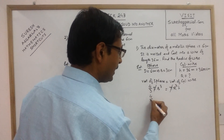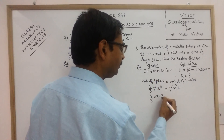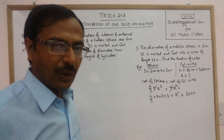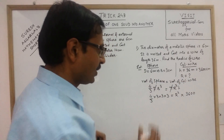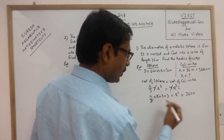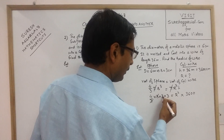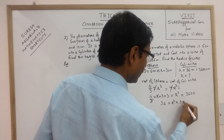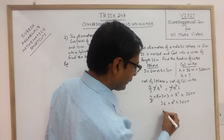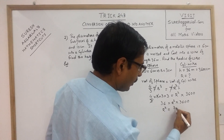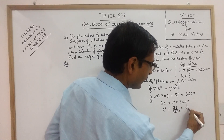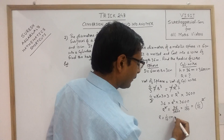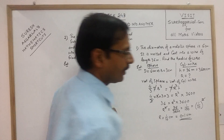Substitute the given values: (4/3) × r³ = R² × h, with π cancelled. r = 3, so r³ = 27; h = 3600 cm. This gives (4/3) × 27 = R² × 3600, which simplifies to 4 × 9 = 36 = R² × 3600. So R² = 36/3600 = 1/100, and since 1/100 = (1/10)², we get R = 1/10 cm = 0.1 cm, which is the required answer.